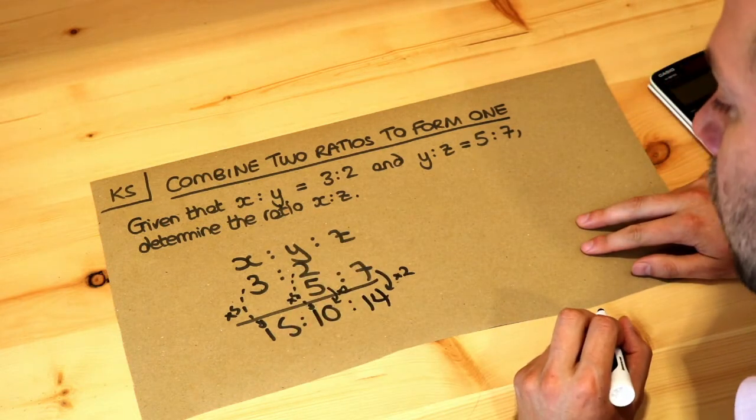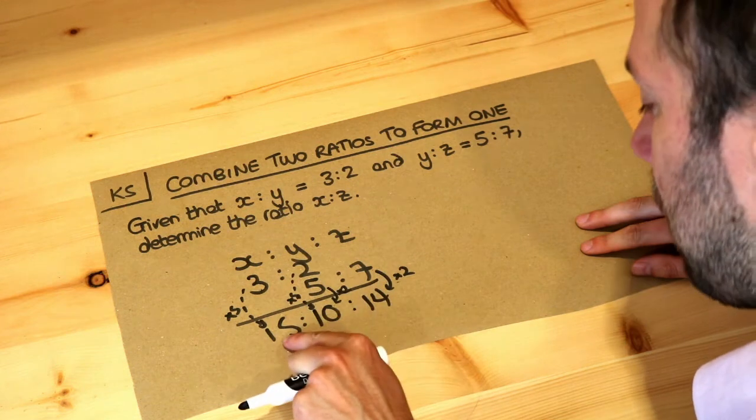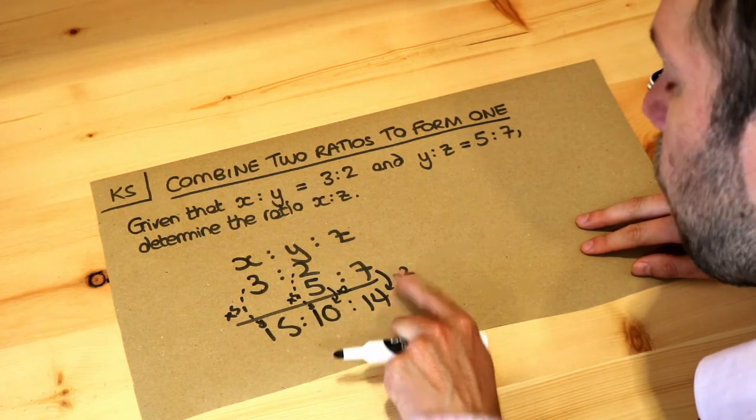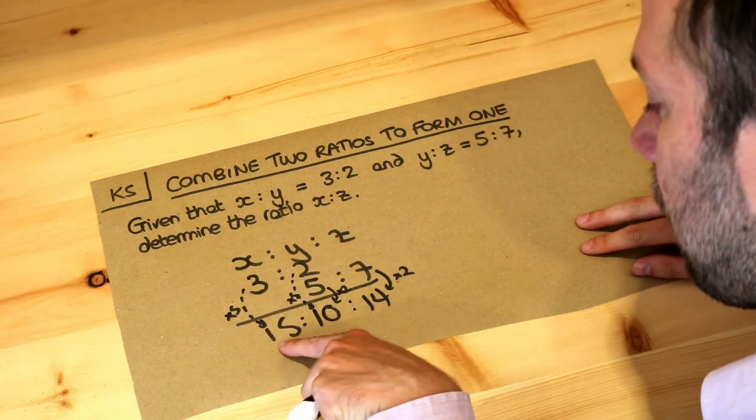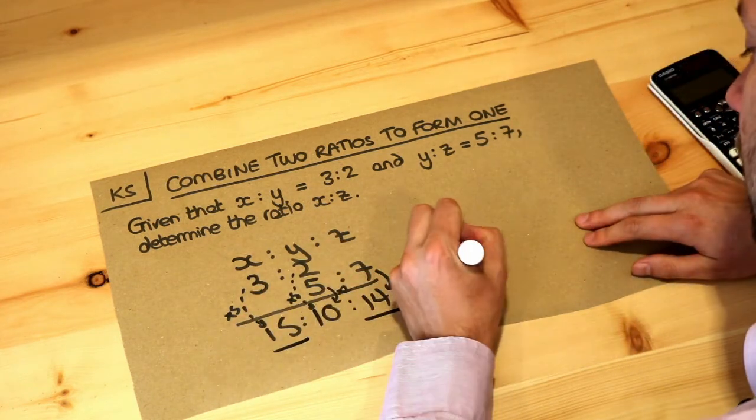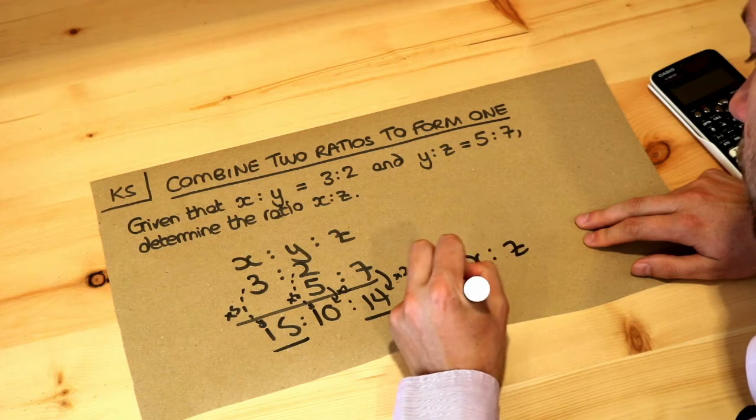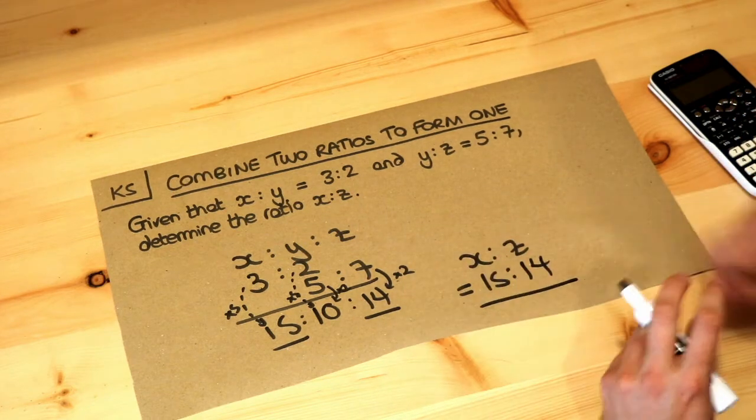So we now know that the ratio of x to y to z is 15 to 10 to 14. Now, we just want the ratio of x to z. So x to z is 15 to 14, and that's the final answer.